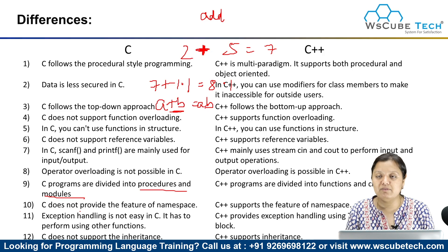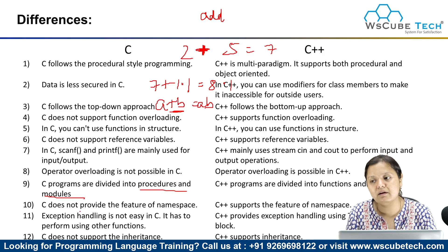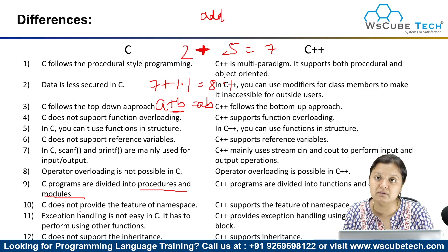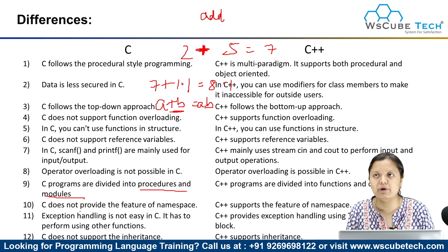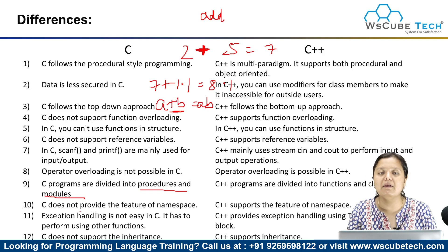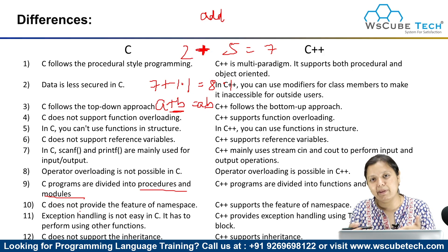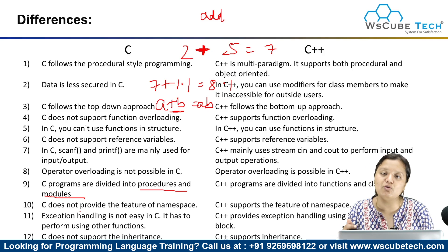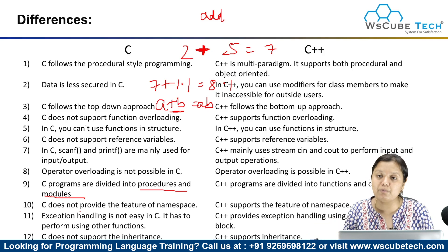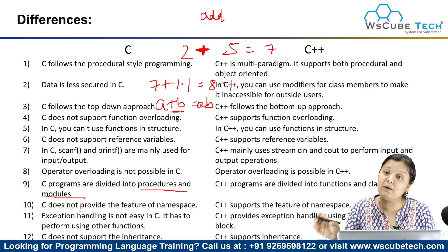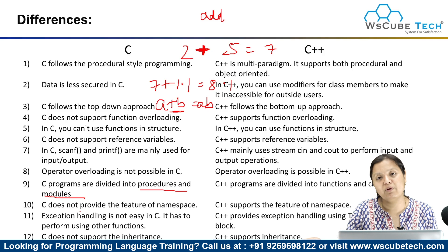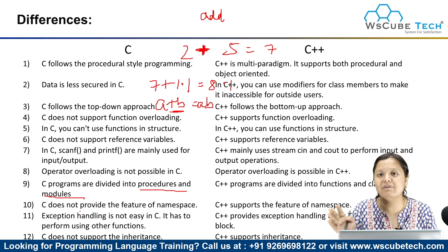C does not provide the namespace feature. Namespace is a very important concept in object-oriented programming. Namespace generally defines the scope of a variable or an identifier in a particular area or block of code, to be more precise. C++ supports the namespace feature, but C language does not. When we learn to implement it, we will easily understand it.